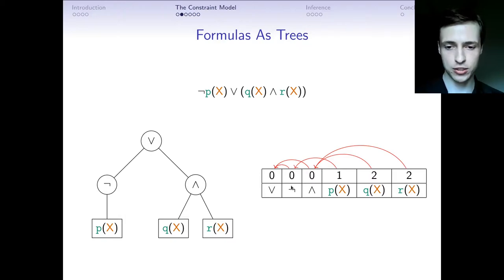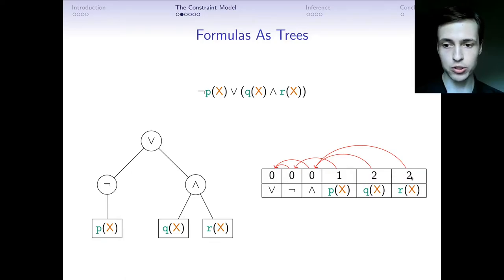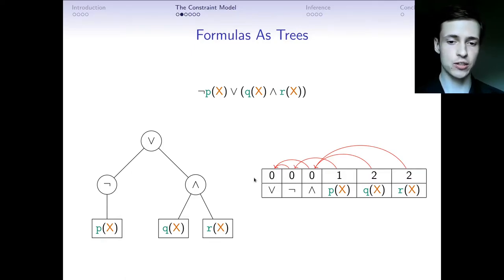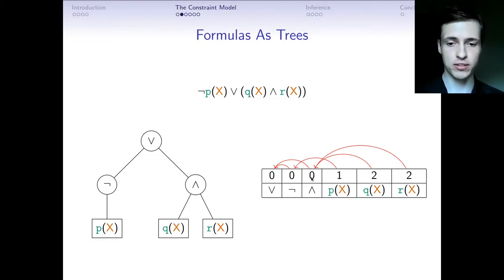We have efficient constraints that can constrain this table to represent a forest, and we can add additional constraints to turn it into a tree and to ensure that each tree gets a unique representation as a table.